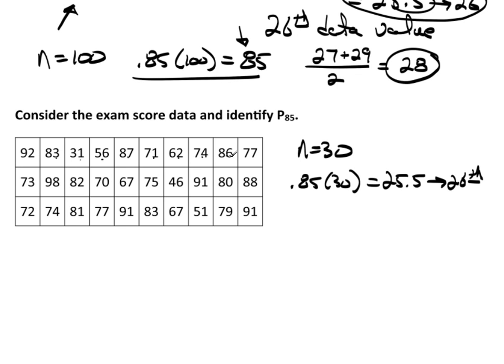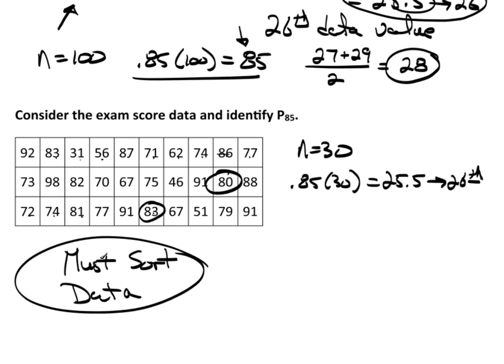Well, counting through the unsorted data I would identify 83. But what if you went this way and counted differently? Right here would be the 26th position. See, I identified two different values simply because I counted differently, which doesn't make any sense. So you have to sort the data. You must sort the data. This is a biggie.